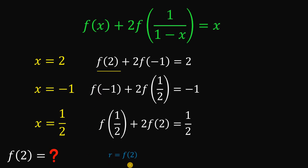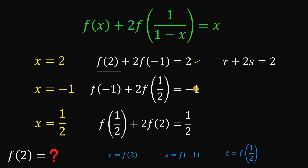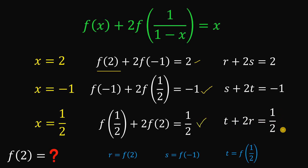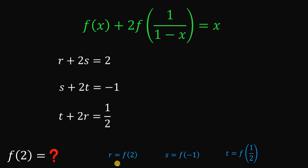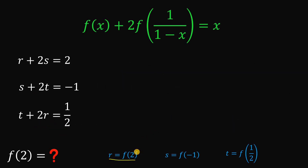Let r be equal to f of 2, let s be equal to f of negative 1, and let t be equal to f of 1 over 2. So the first equation becomes r plus 2s equals 2. The second equation becomes s plus 2t equals negative 1. The third equation becomes t plus 2r equals 1 over 2. Using these three equations, we can now solve for the value of r, which is f of 2.